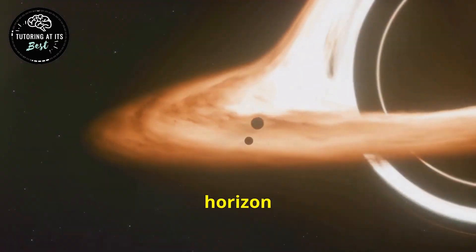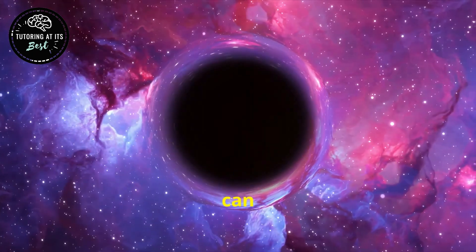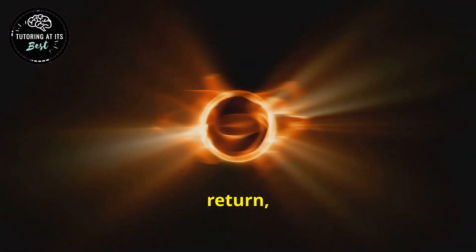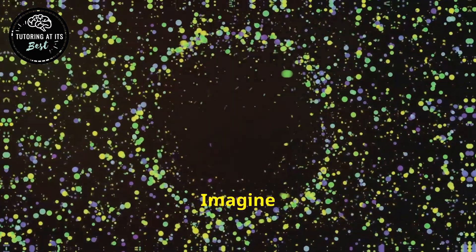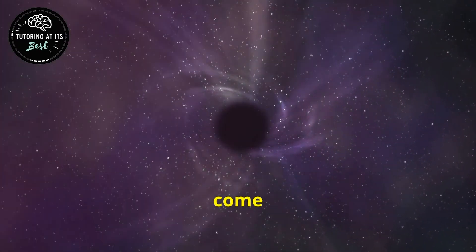The event horizon is the defining feature of a black hole. It is the boundary beyond which nothing can return. It's a point of no return, a cosmic trap door. Imagine it as a one-way membrane. Things can fall in, but nothing can come out.